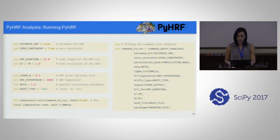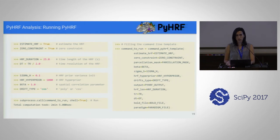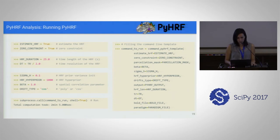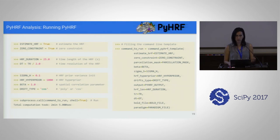For algorithm parameters: Sigma H is the initialization of the prior variance of the HRF. HRF hyperprior — we recommend using 1000; it enforces smoothness of the temporal response. If you put zero, you won't enforce it, but we recommend 1000. Beta is a parameter of the spatial correlation. You can choose cosine or polynomial drift, but we recommend cosine. Then we can run pyHRF, and it takes some time.